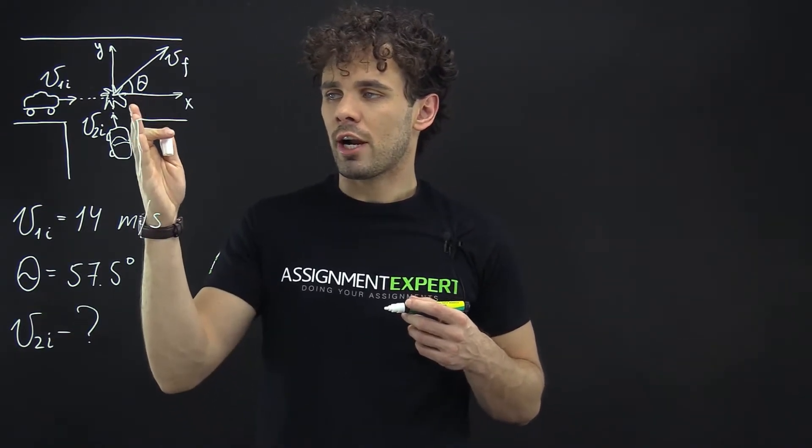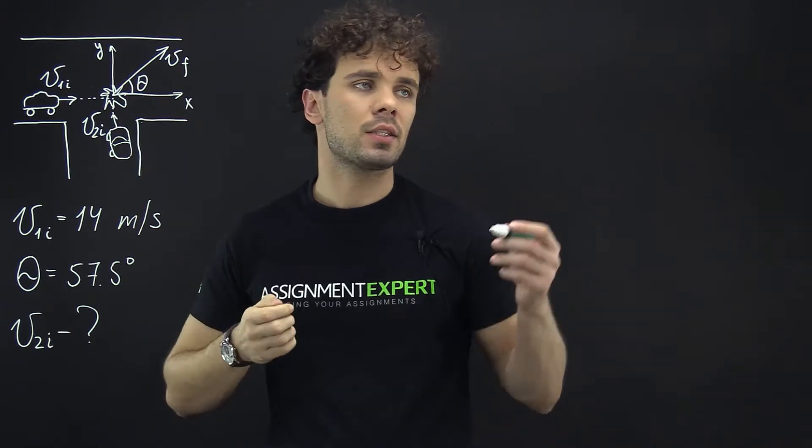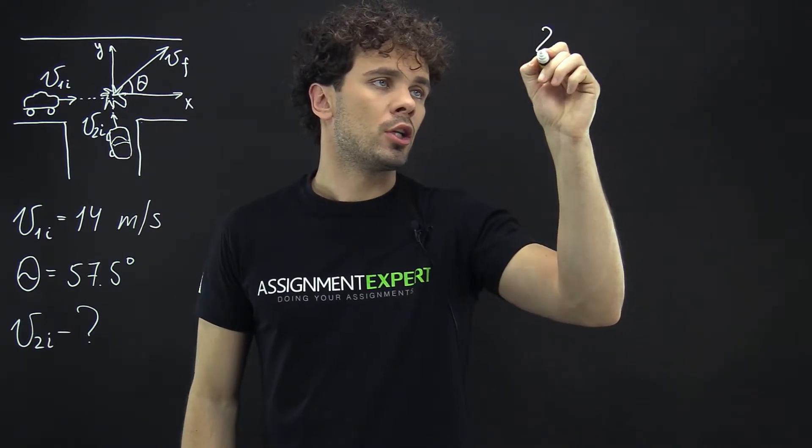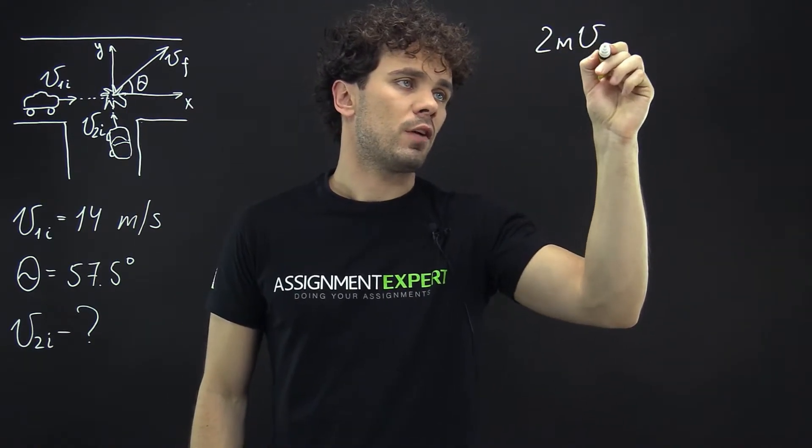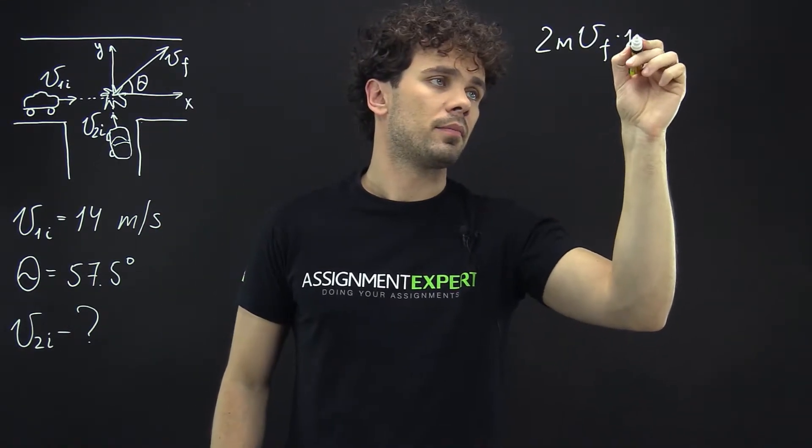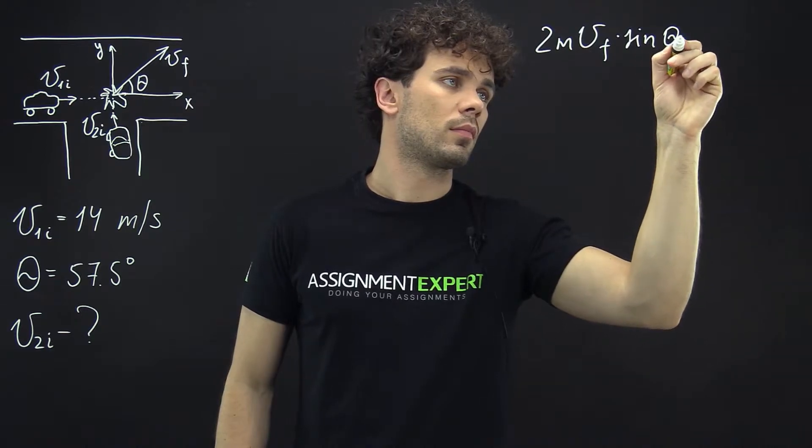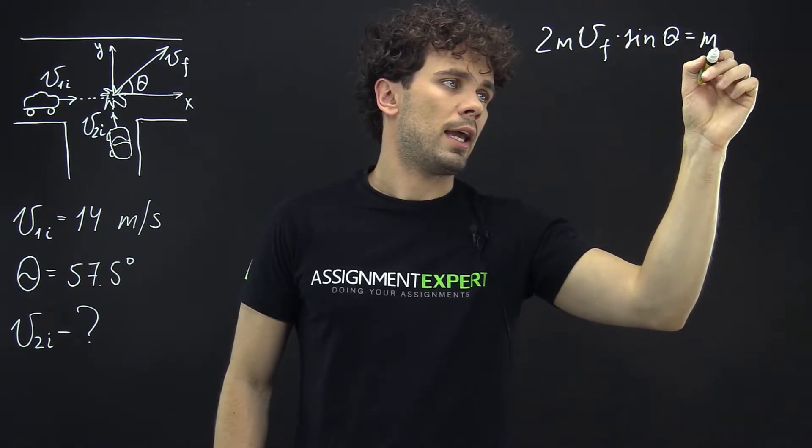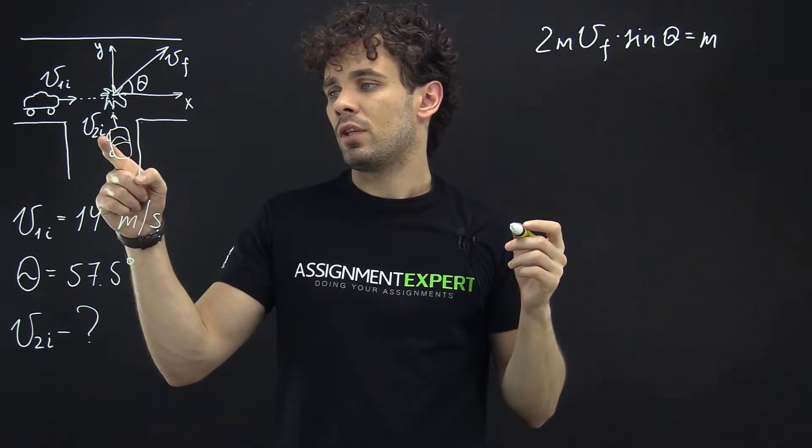So, for the northern direction which is y-axis in our case we have the following: 2 times m times final speed times sine of the angle theta equals m times V2i.